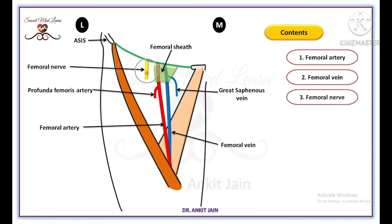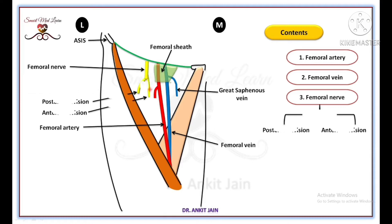The femoral nerve lies lateral to the femoral artery, outside the femoral sheath. Approximately 2.5 cm below the inguinal ligament, the femoral nerve divides into an anterior division and a posterior division.